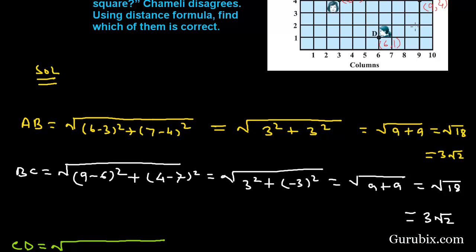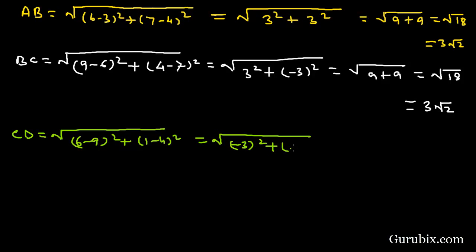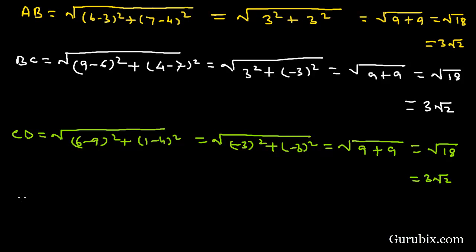Now we find CD: CD equals the square root of (6 − 9)² + (1 − 4)², which equals √((−3)² + (−3)²) = √(9 + 9) = √18 = 3√2.